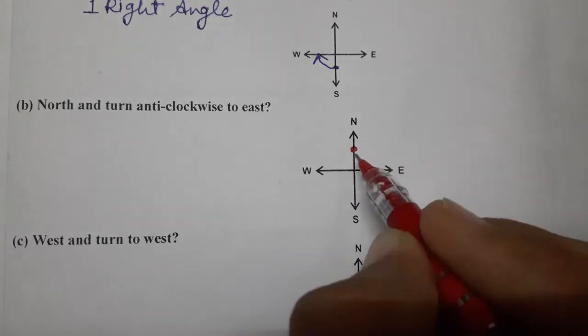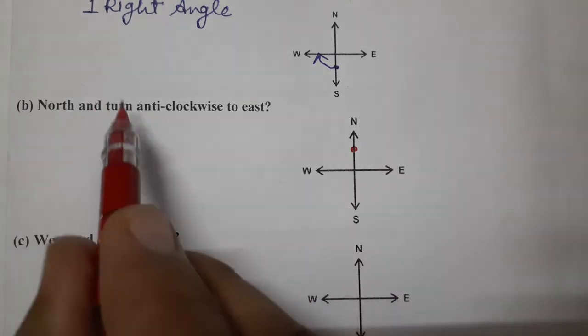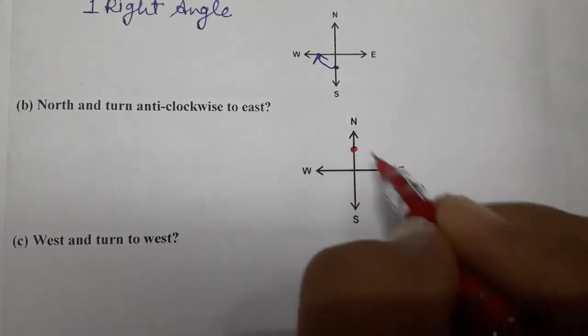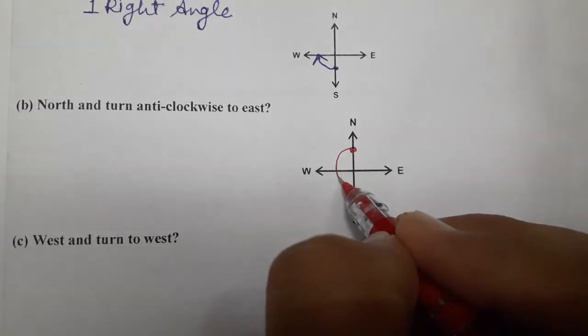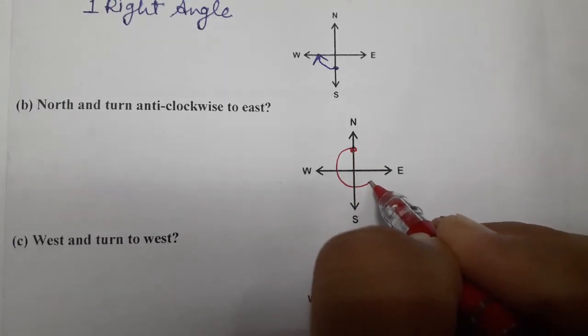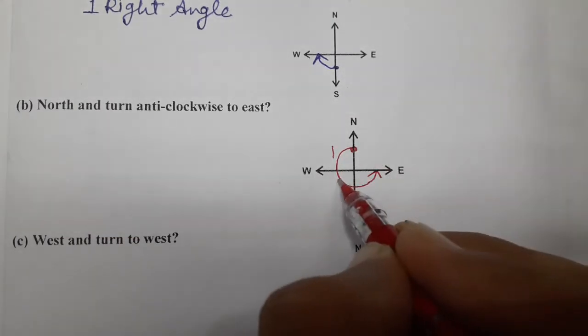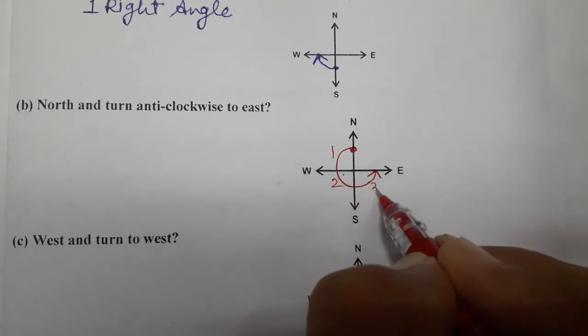Now anti-clockwise, in the opposite direction of clock, to east. Anti-clockwise is like this. So how many right angles? Count. One, two, and three right angles.